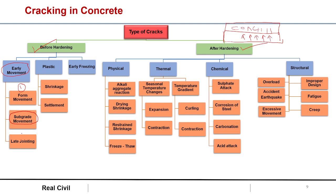Next is late jointing. Suppose we have placed one batch of concrete and this batch gets hardened, then the second batch is poured on the hardened concrete — there may be a crack at that joint. That crack may be called a late jointing crack, or cracks at the joints can be considered as late jointing cracks.